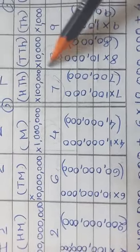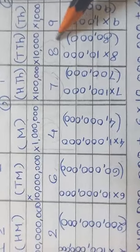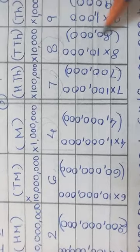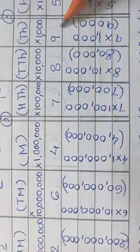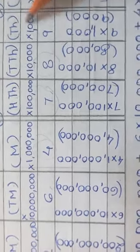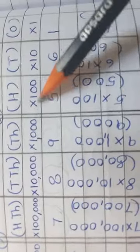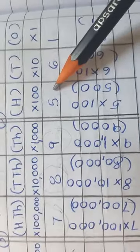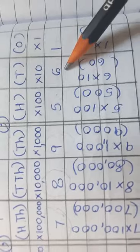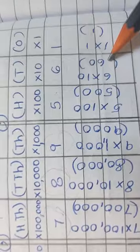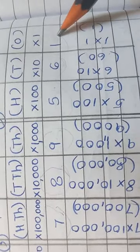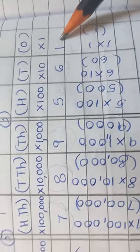8 has a face value of 8, but a place value of 800,000. 9 has a face value of 9, but a place value of 9,000. 5 has a face value of 5, but a place value of 500. 6 has a face value of 6, but a place value of 60. 1 has both face value and place value the same, that is 1.